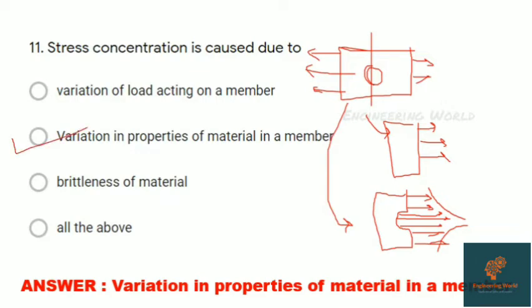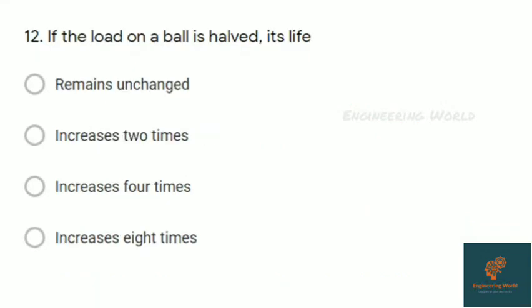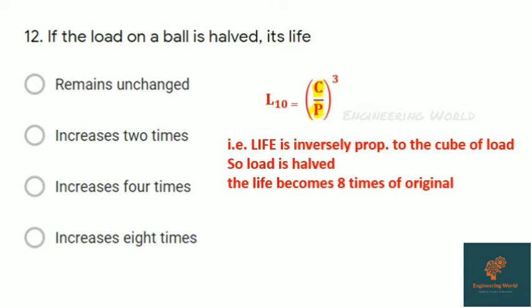Question twelve: If load on a ball bearing is halved, its life is... Actually, L10 life equals (C/P)³, where C is dynamic load capacity and P is bearing load. So life is inversely proportional to the cube of the load. If load is halved, life becomes 8 times the original. Answer is: increase 8 times.